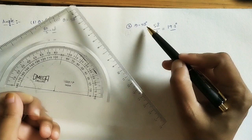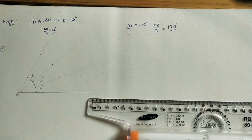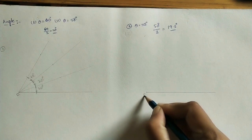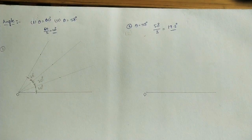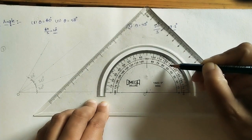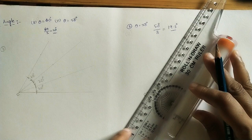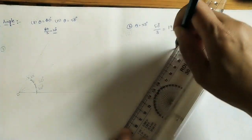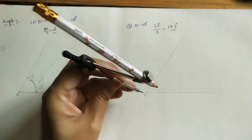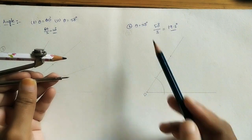Since we can't exactly mark 19.3° with the protractor, I will show another method. First, draw a baseline using a scale, mark the initial point O, then mark the given angle of 58 degrees using the protractor — counting 10, 20, 30, 40, 50, 55, 58 — and join that point to the initial point O. Using a compass, take any radius and draw an arc joining both lines. This angle is 58 degrees and we need to trisect it.